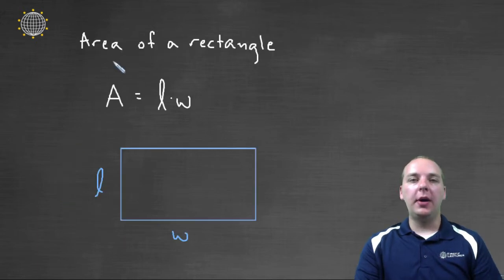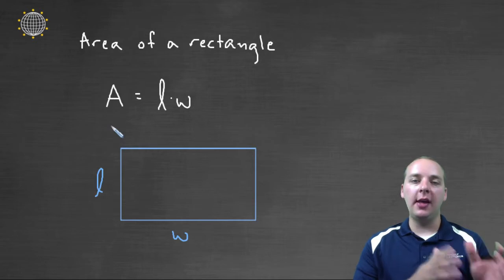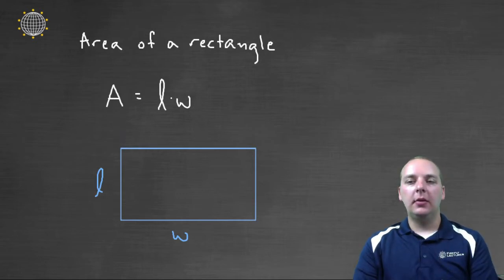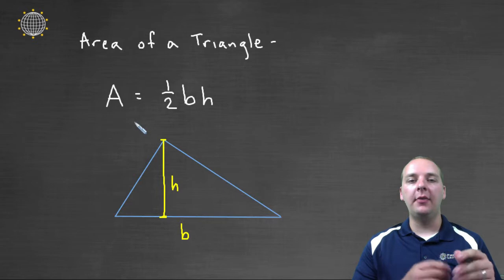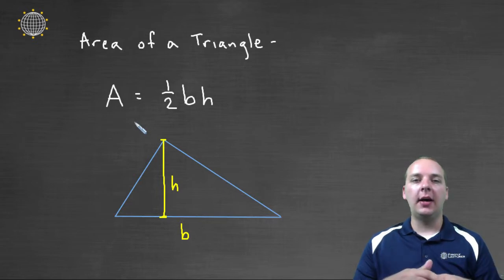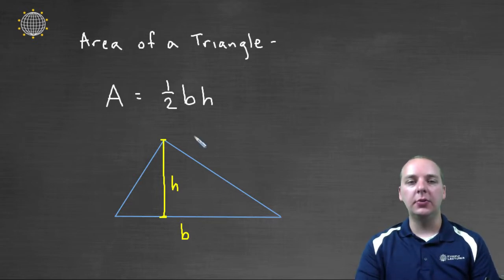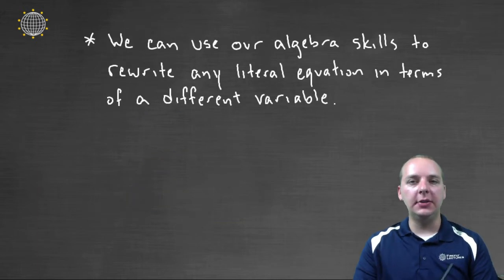A couple more, the area of a rectangle is a popular one. That's length times width. A, the area, equals length times width. And we'll look at this one, the area of a triangle. The area of a triangle is one-half the base of the triangle, times the height of the triangle. So we'll use B and H. So A equals one-half B times H.